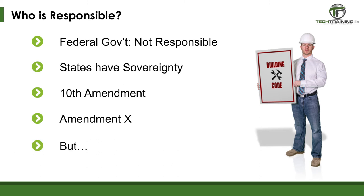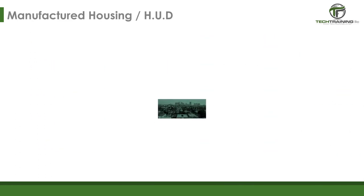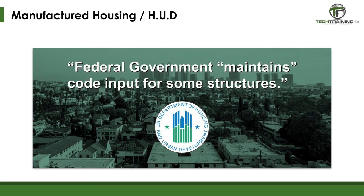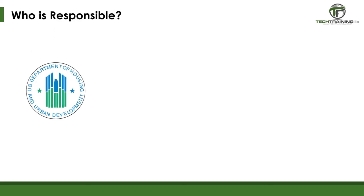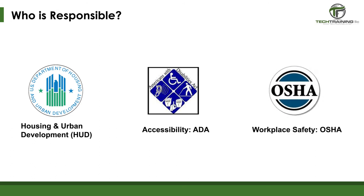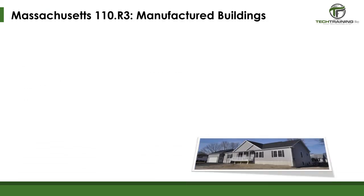The 10th Amendment states: 'Any powers not specifically given to the federal government through the Constitution shall remain with the states and the people.' However, there are exceptions. When the federal government funds the construction, they will have a say in the codes. A good example is Facilities Construction by Housing and Urban Development, or HUD, or in the case of Manufactured Housing. Because these buildings are manufactured in a central location and then transported throughout the country, they must meet a code set by Housing and Urban Development. These buildings aid in interstate commerce and are the responsibility of the federal government. But even here, states have a say in the code.